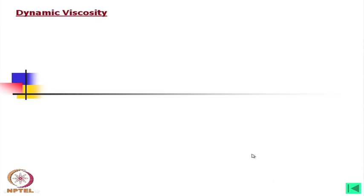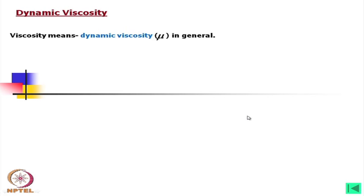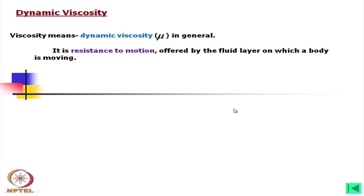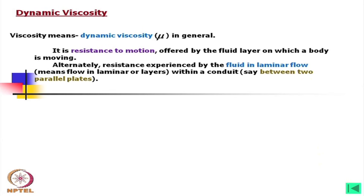We will now come to a very important property called dynamic viscosity. When we mention the viscosity of oil, we normally mean the dynamic viscosity, denoted by μ in general. It is the resistance to motion offered by the fluid layer on which a body is moving. Alternately, it is the resistance experienced by the fluid in laminar flow — flow in layers within a conduit, such as between two parallel plates.